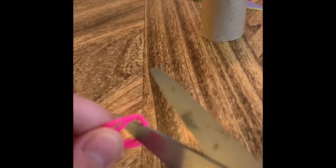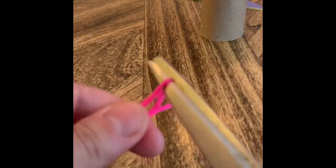I'm taking one large piece of string and I folded it in half and in half again and then I just cut where the loops were at the end. So now I have four pieces that are the same length.